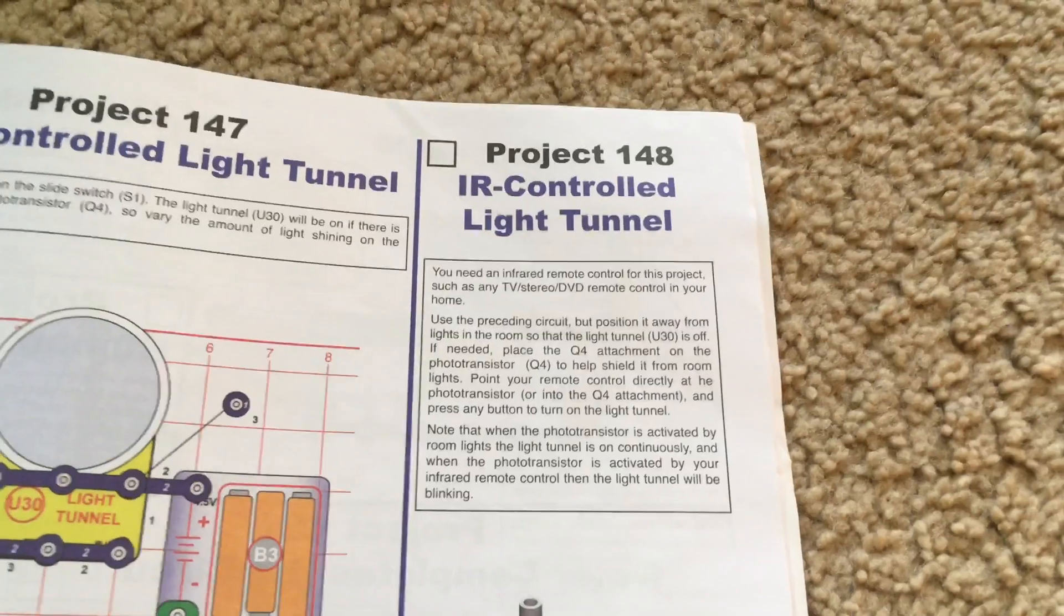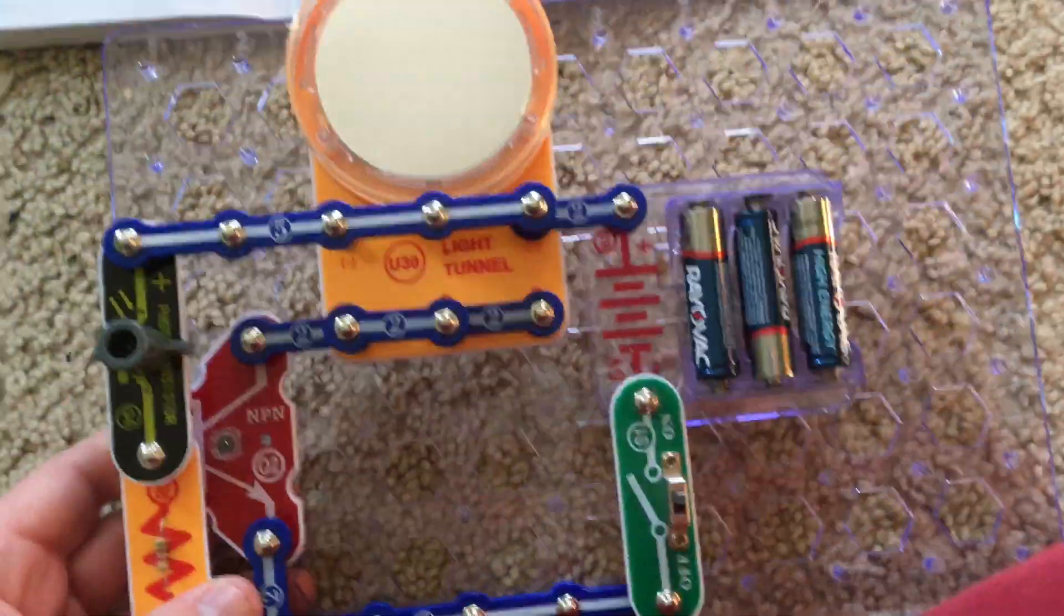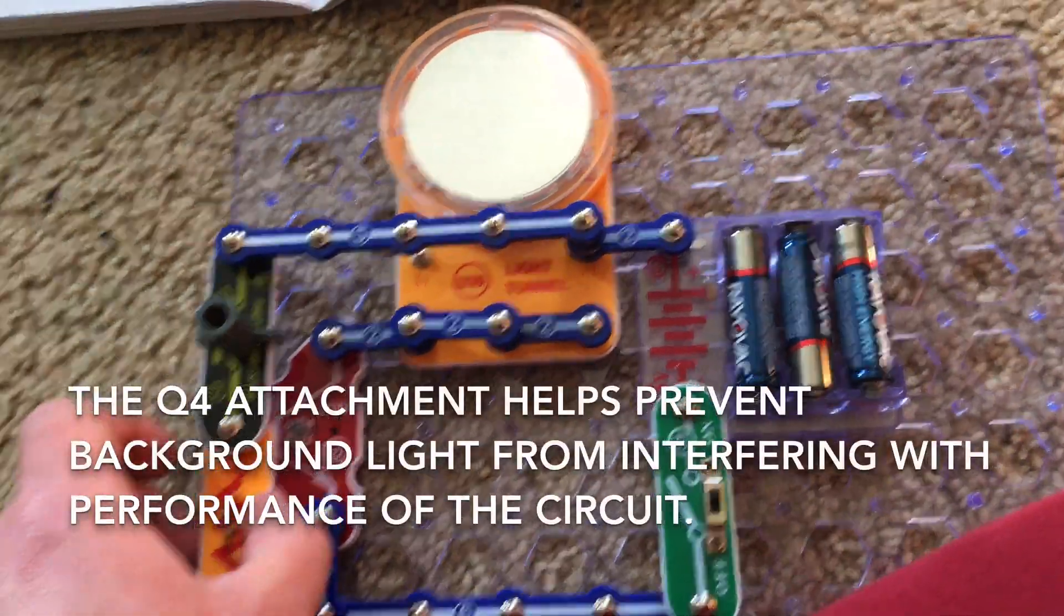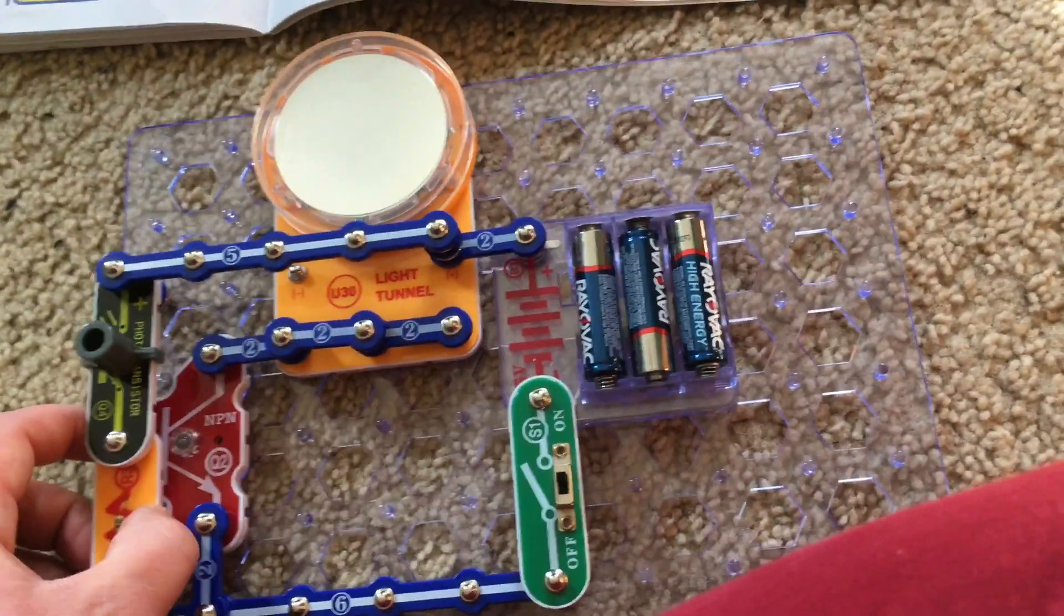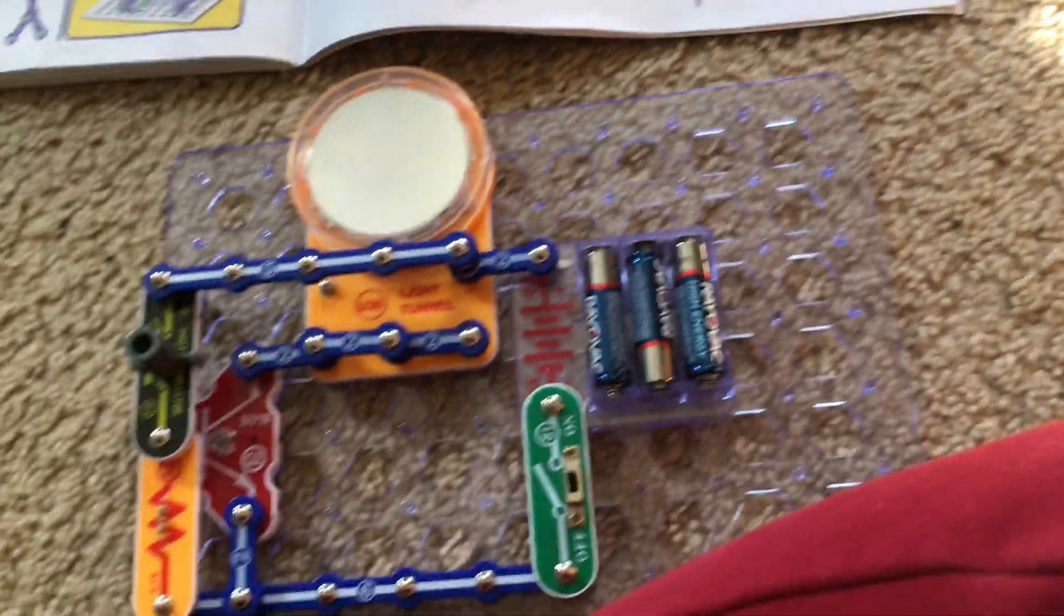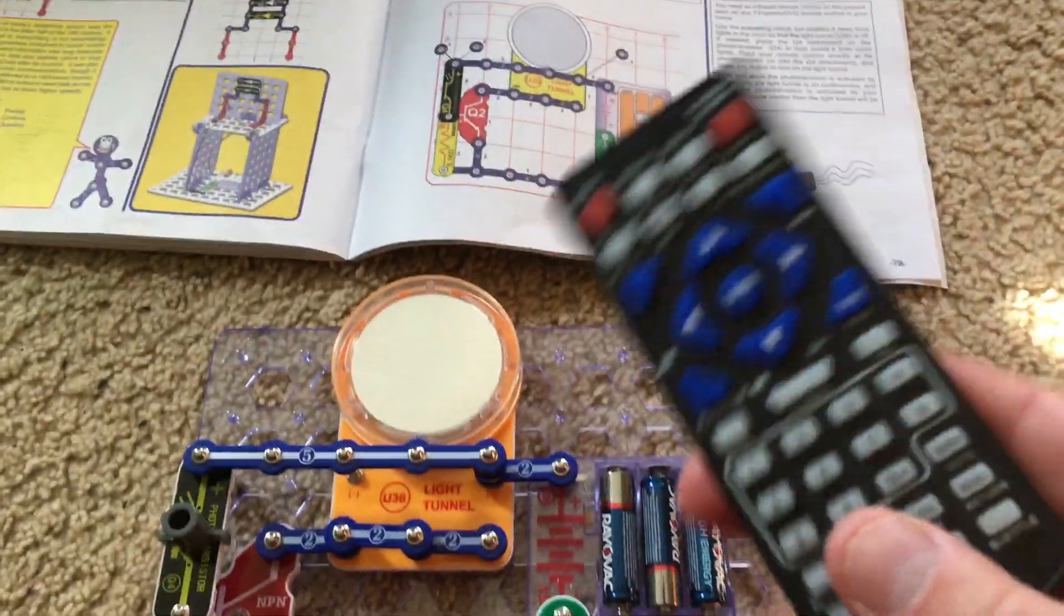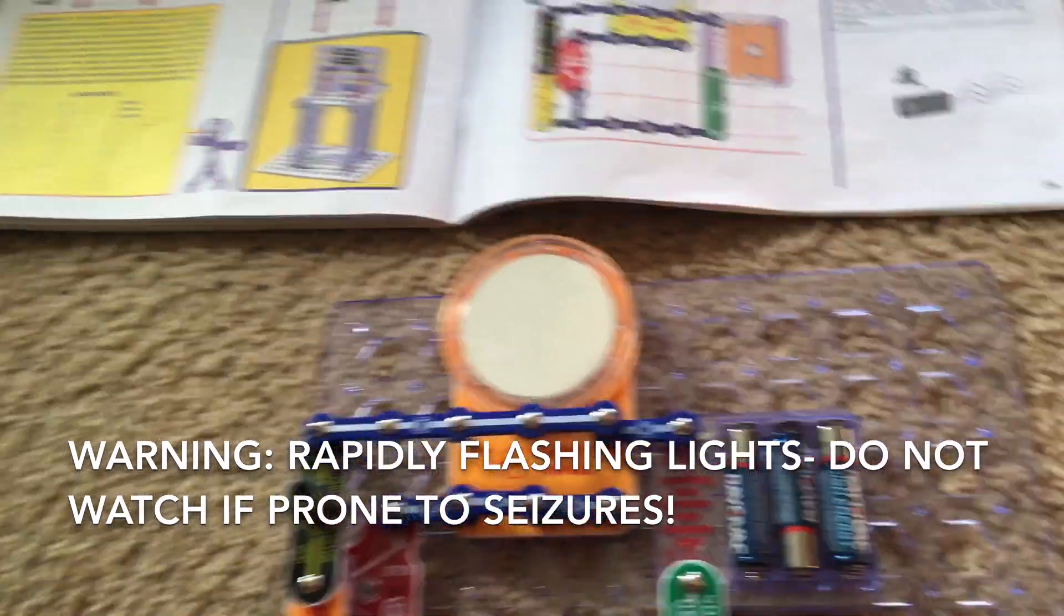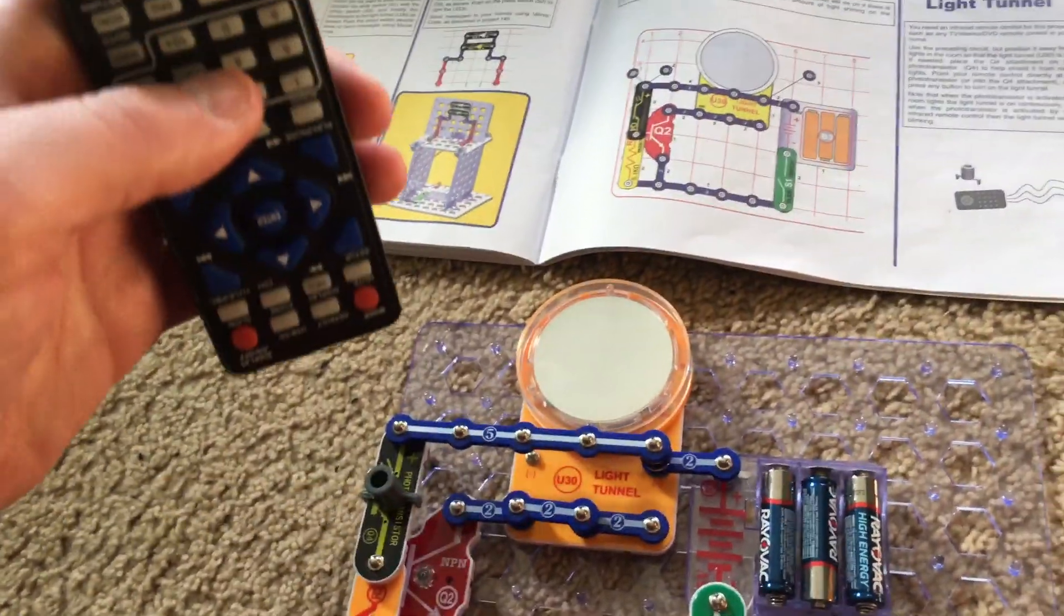Project 148, IR controlled light tunnel. We will use the previous circuit but put the Q4 attachment onto the photo transistor. If necessary, move the circuit into a darker place so that background light does not interfere with the circuit's operation. Then we will also need an infrared remote control, and we'll hold it directly over the photo transistor, pointing it down, and push any button.